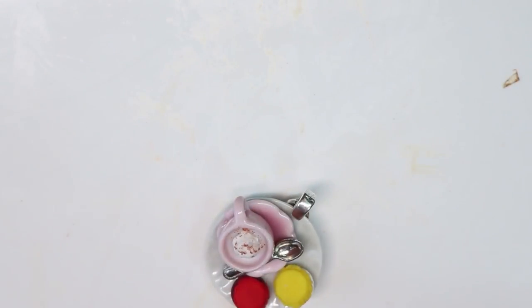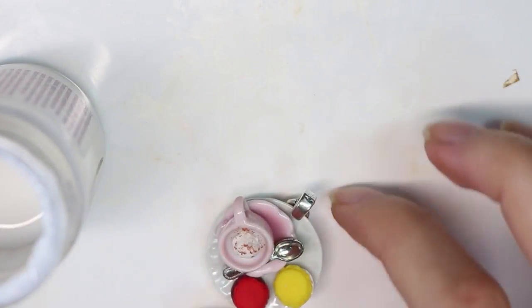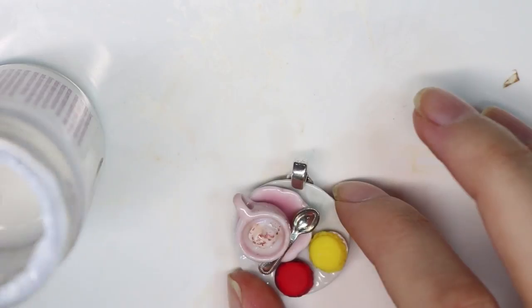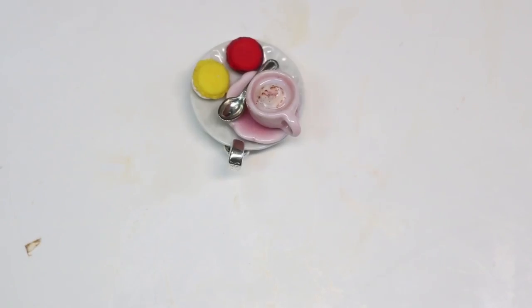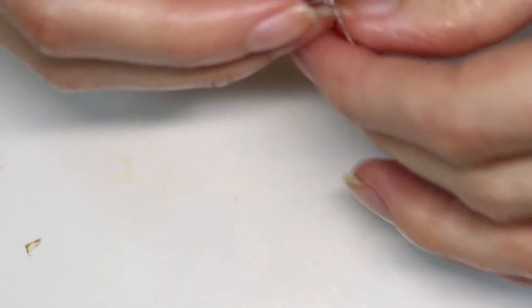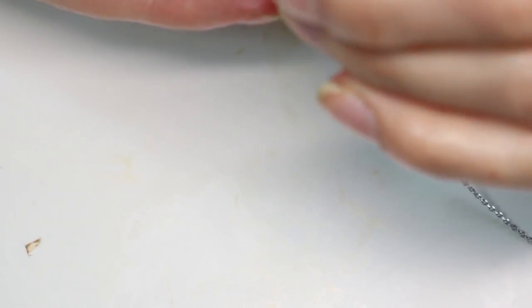And the last step is we're going to be adding on the varnish. So I'm using my Sculpey Glaze and I'm adding it on the inside of the hot chocolate. And once that's dry, you can take your necklace and add that through the bail and close it on up.